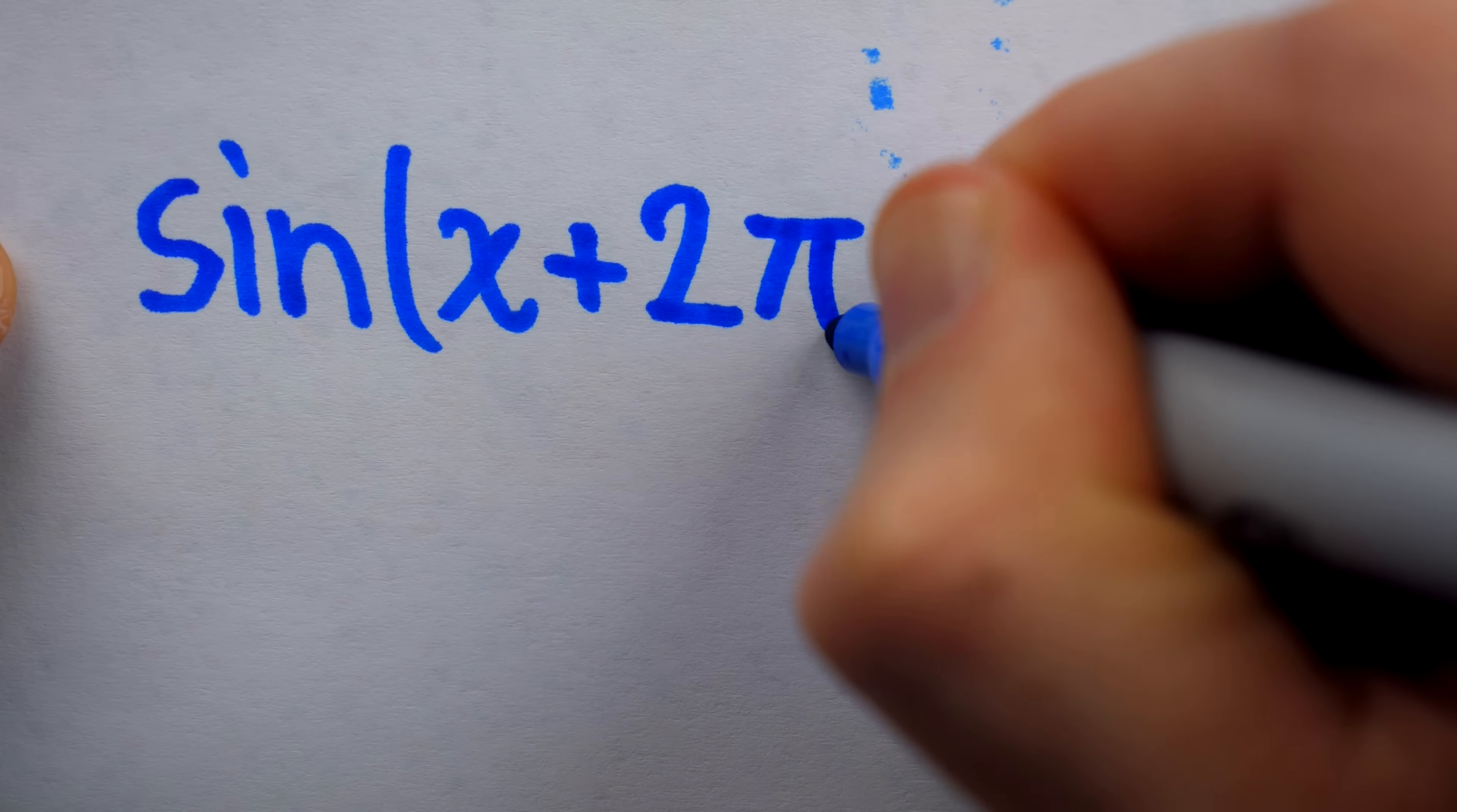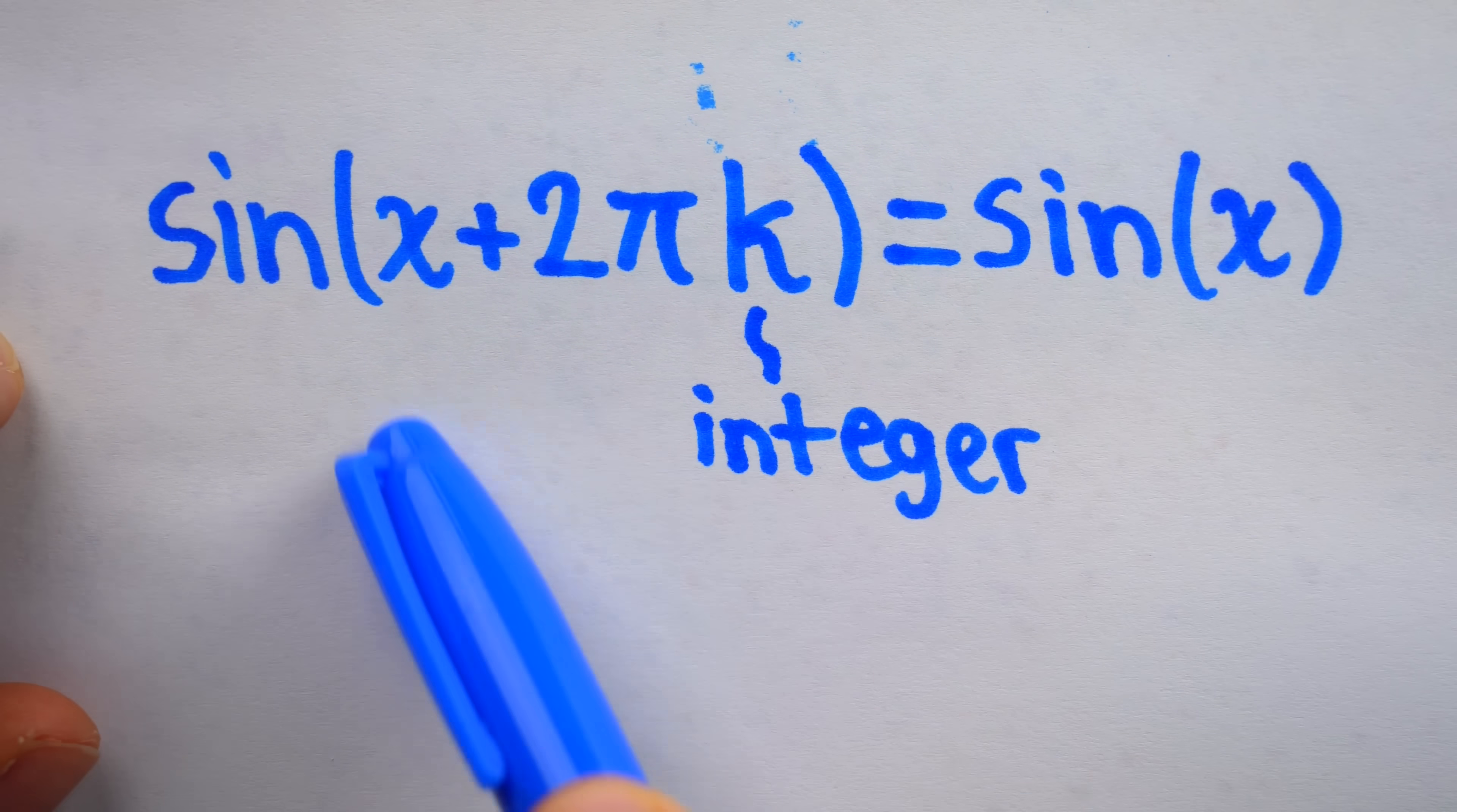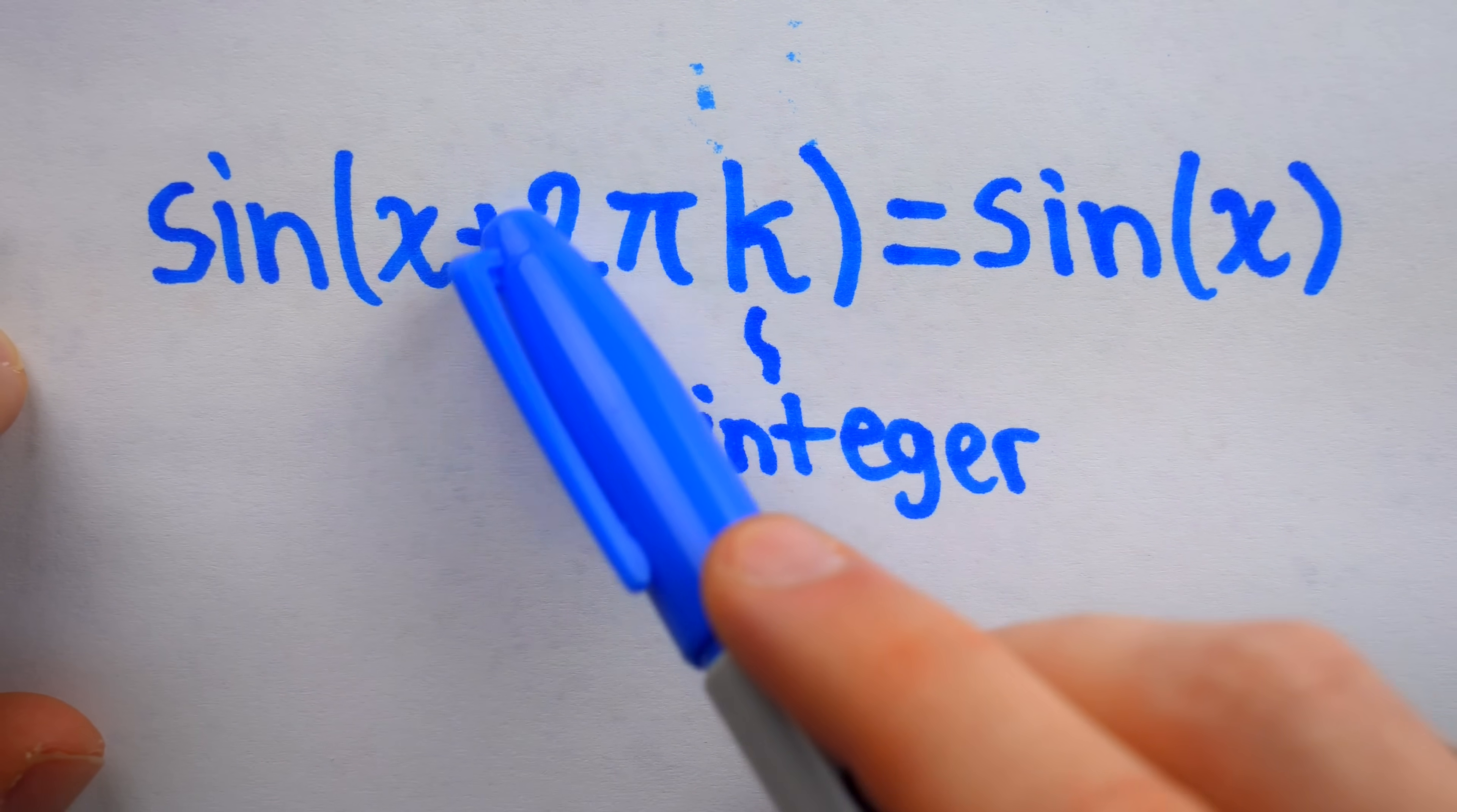So sine of x plus two pi is sine of x. Of course, by very much the same logic, sine of x plus two pi times k is equal to sine of x for any integer k. It doesn't matter how many full rotations we make in the counterclockwise or the clockwise direction.